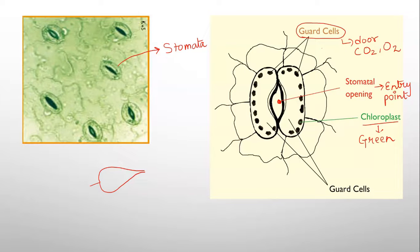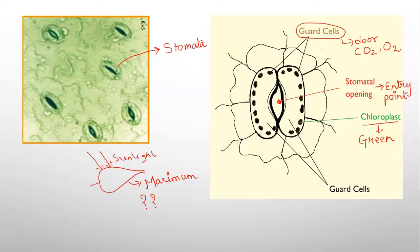Stomata are present in maximum numbers on the lower side of the leaf. Why? Because on the lower side they are not in direct contact with sunlight, and they are more protected from the breeze. Because of this, the loss of water through stomata is less. That is why stomata are found in maximum numbers on the lower side of the leaf.